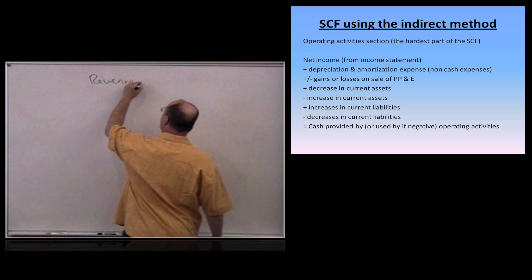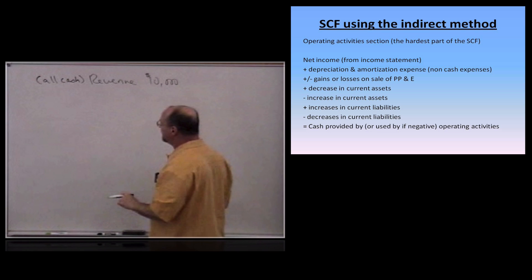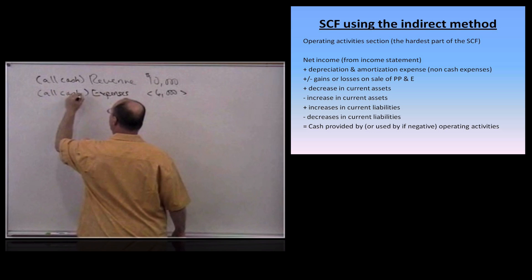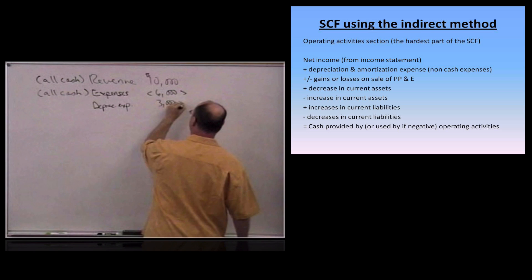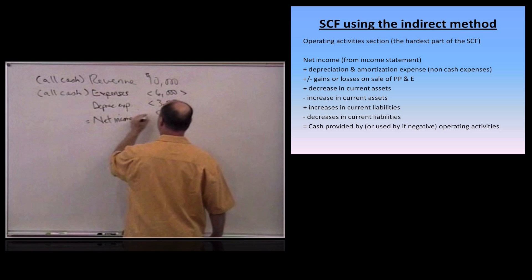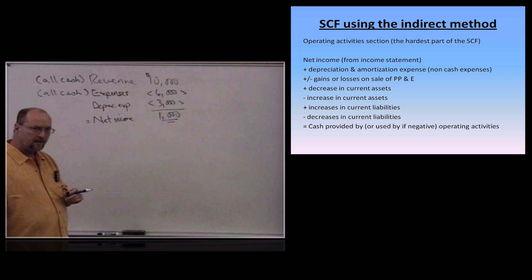Suppose I have revenue of $10,000 — all received in cash, no accounts receivable. I have expenses of $6,000 — all paid in cash, no outstanding accounts payable. And I also have depreciation expense of $3,000. Revenue minus expenses gives me net income of $1,000. So on the income statement, I would report net income of $1,000.